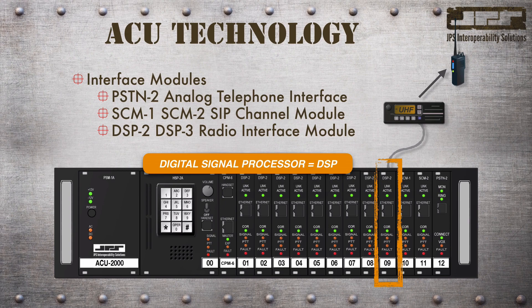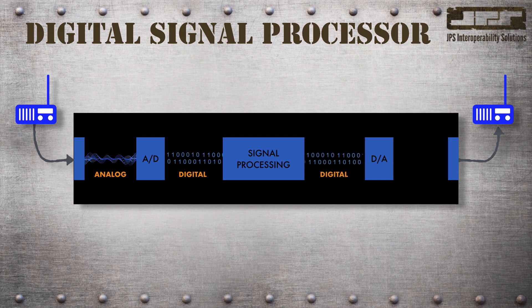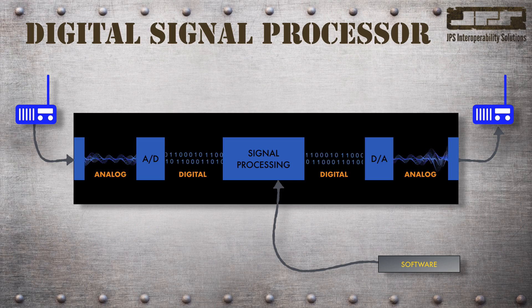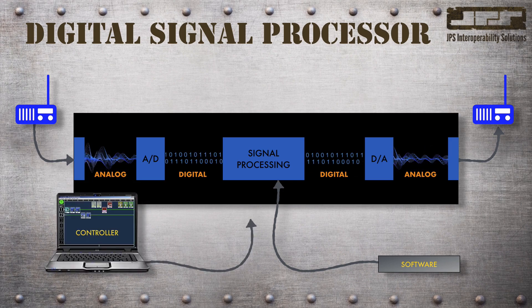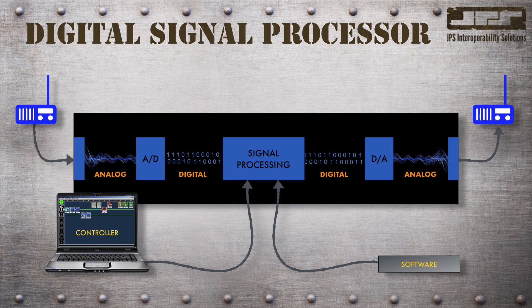Digital signal processing is used extensively in nearly all JPS products and solutions. We use digital signal processors to convert analog audio into a digital format, where it's easier to analyze and alter the audio data in ones and zeros. We can then use software to apply complex filters, detect human speech, remove noise, add and subtract gain, and buffer or delay audio. Controllers can be used to make those adjustments. Once we're done analyzing and altering the digital data, we convert it back into an analog signal, which can then be shared with other disparate communication systems.